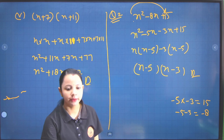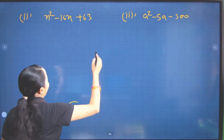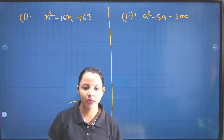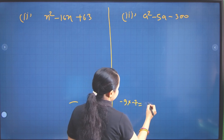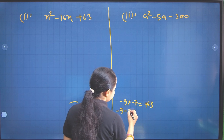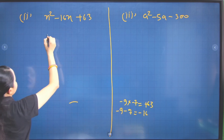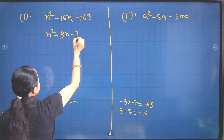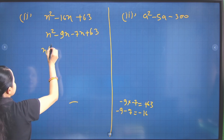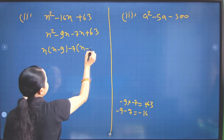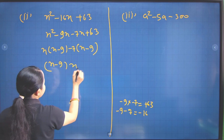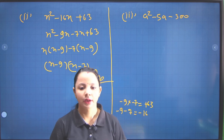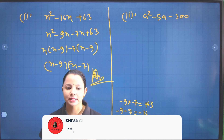Taking common factors: x(x minus 5) minus 3(x minus 5), giving us (x minus 5)(x minus 3). This is our answer. For the next question, we factor 63 as 9 times 7. We need minus 9 and minus 7, which multiply to plus 63 and add to minus 16. So x squared minus 9x minus 7x plus 63. Taking common: x(x minus 9) minus 7(x minus 9), giving (x minus 9)(x minus 7).